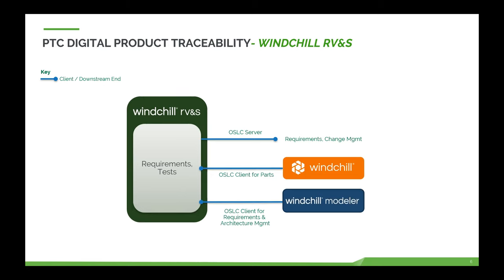RVnS also has a client for Windchill parts — inside RVnS you can connect to Windchill, run a search for parts, and then create OSLC links to the Windchill data. Similarly, there's an OSLC client for Windchill Modeler that allows the RVnS user to create links to requirements and architecture management items — typically UML, SysML, and other MBSE-type data. You can also create links to your own data in the same instance of RVnS, or across multiple instances.